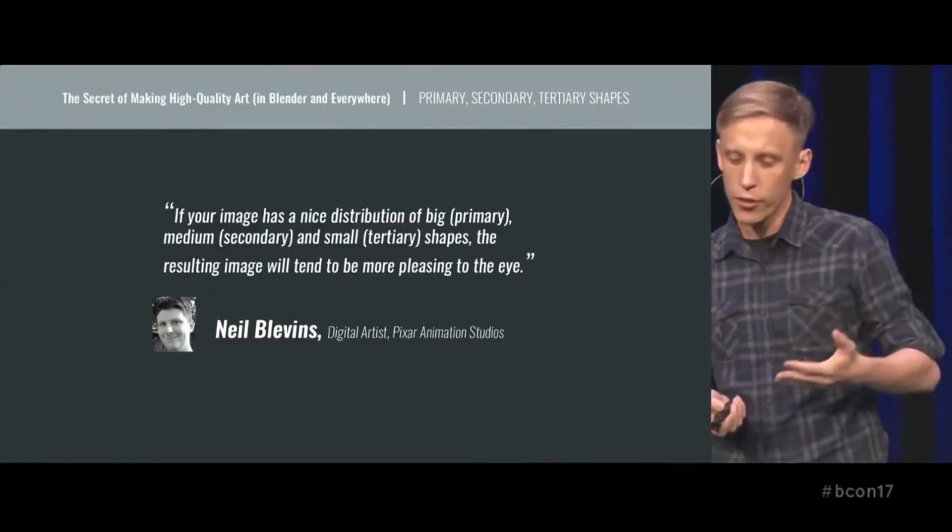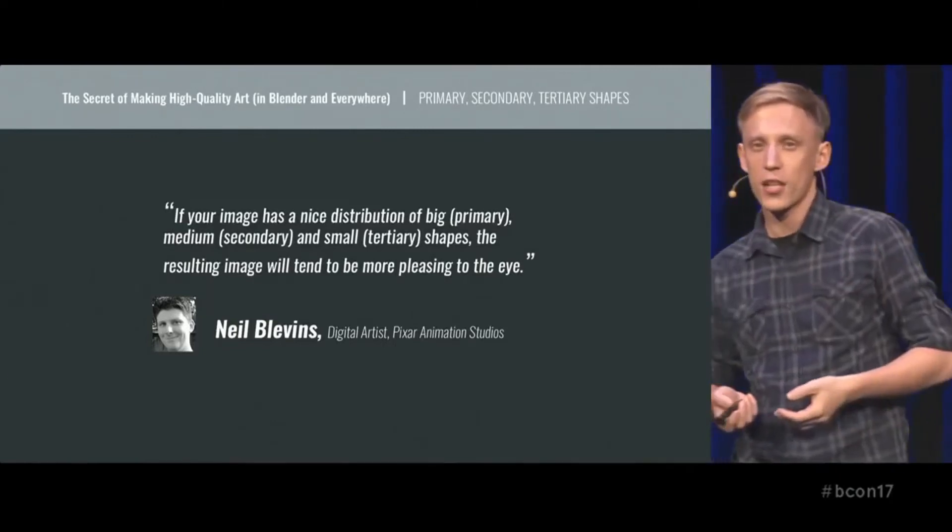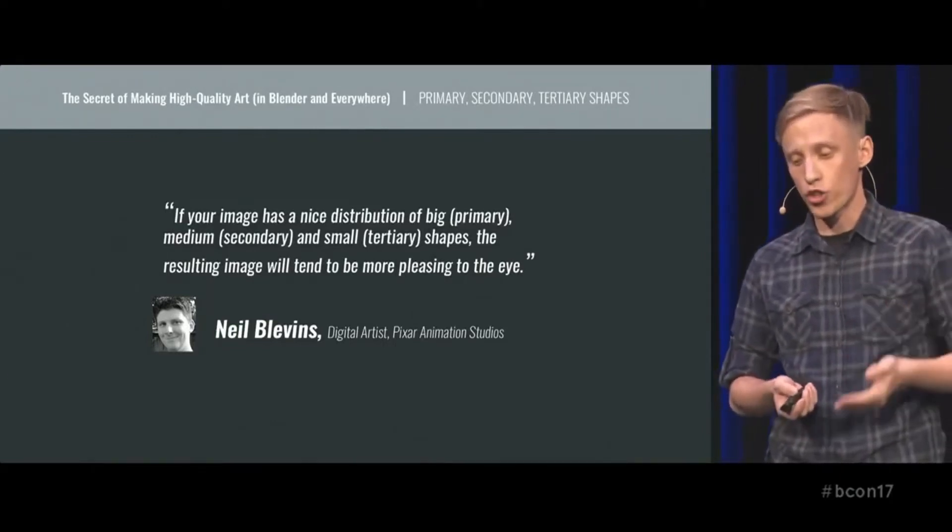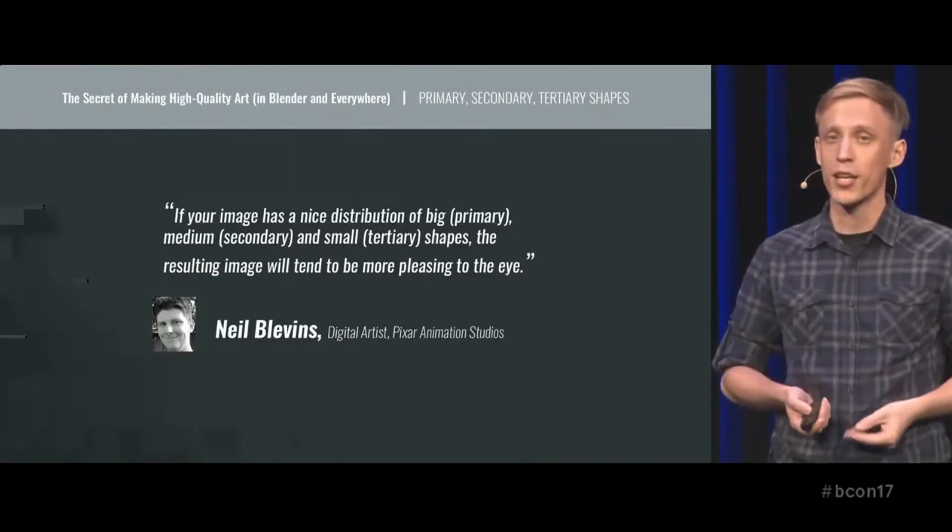A couple of years ago I stumbled across one of his tutorials called Primary, Secondary, Tertiary Shapes. The main thought of the tutorial was that if your image has a nice distribution of big, medium, and small shapes, the resulting image will tend to be more pleasing to the eye. Once I read this tutorial and saw the diagrams of the right and wrong distribution, I thought — that's great. I love simplifying stuff like that: arrange your big and medium shapes inside the composition like this, you win; arrange it like this, you lose.